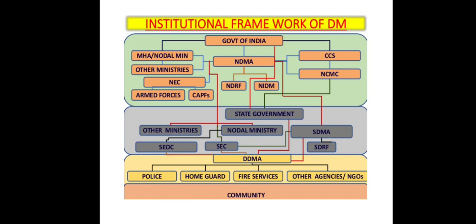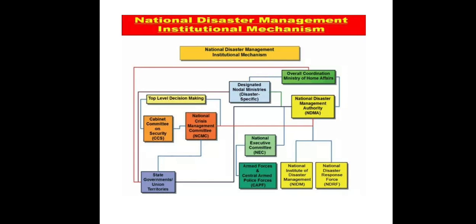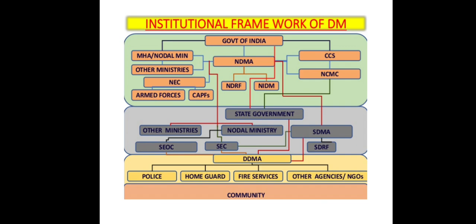All these categories are part of the National Disaster Management Institutional Mechanisms. Below that, state government, other ministries, Nodal Ministry, SDMA, SEOC, SEC, and SDRFs are there. At the district level, we can see DDMA, which includes police, home guard, fire service, other agencies, as well as NGOs. Below that are the community categories in the institutional frameworks of disaster management.